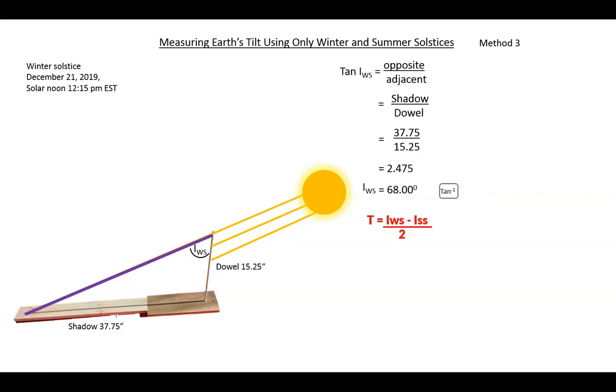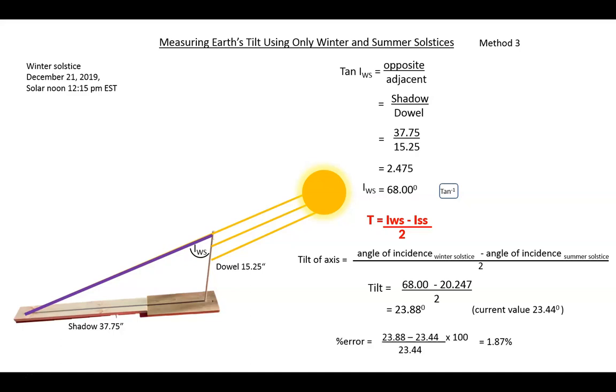Here is the tilt formula, whose origin is explained later. In words, it says that the tilt of the axis is one-half the difference between the angle of incidence at the winter and summer solstices. We enter the values 68 from the winter solstice and 20.247, rounded off, from the summer solstice from the previous slide. Then divide by two, and we get a tilt of 23.88 degrees. Compared to 23.44, it shows an error of 1.87 percent. So these then are the three ways to measure the tilt of Earth's axis.